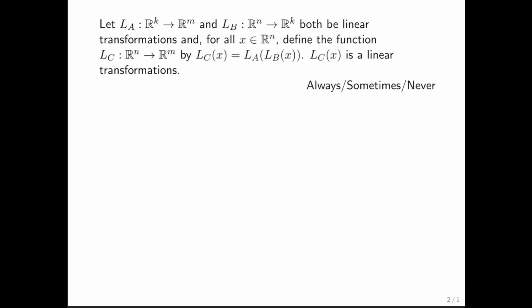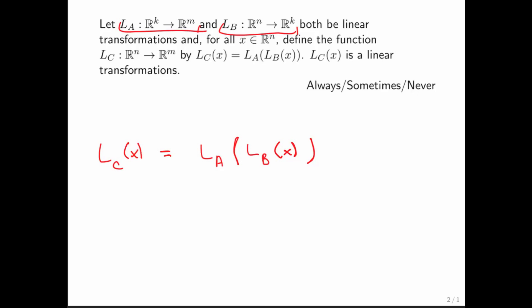It all starts with this question: if you have two linear transformations, L of A and L of B, and you define a new linear transformation LC such that if you plug in a vector x, you evaluate that x with linear transformation B and then take the result and plug it into linear transformation A. Now, if the vector that goes in is of size N, then that goes in there as well. What that means is that the linear transformation B has to take a vector of size N into some other size — let's call it K.